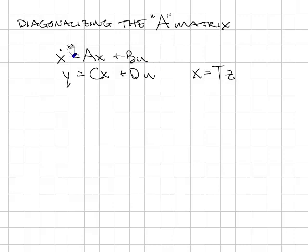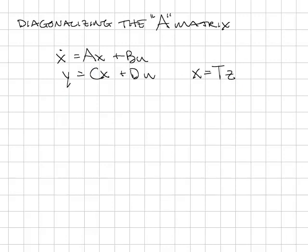Given a state-space form of a system, recall that we can change the states — that is, we can change the x values and the corresponding A, B, C matrices without changing the relationship between U and Y. That's called a similarity transformation. One useful similarity transformation creates a diagonal A matrix, which is useful because the eigenvalues of A correspond to the poles of the system, and if A is diagonalized, the eigenvalues are the elements on the diagonal.